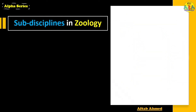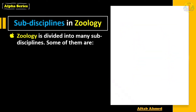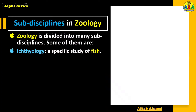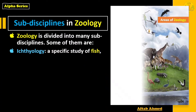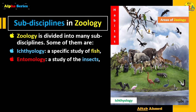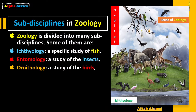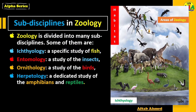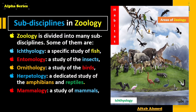Zoology is divided into many subdisciplines. Some of them are discussed here: ichthyology, which is the specific study of fish; entomology, which is the study of insects; ornithology, which is the study of birds; and herpetology, which is a dedicated study of amphibians and reptiles.